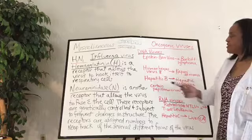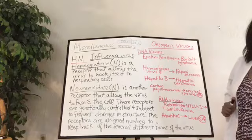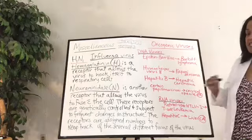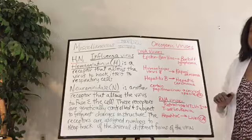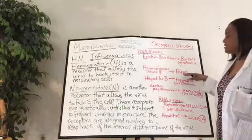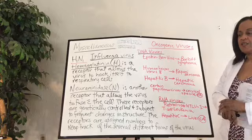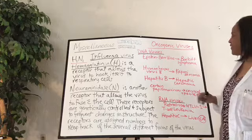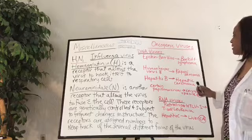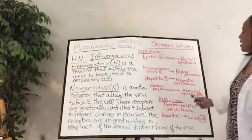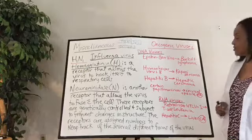Human herpesvirus 8 (HHV-8) causes Kaposi sarcoma, seen in immunocompromised people — more specifically in patients afflicted with AIDS. It's a rare cancer in the general population, but not rare in AIDS patients. It presents as a purplish discoloration of the skin, looking like a very deep bruise, and is very distinctive once you've seen it.